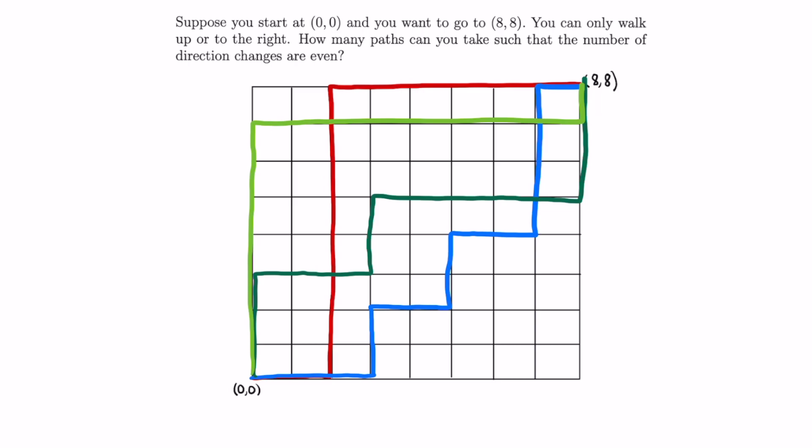But why is that? Well, we can view our path as a series of U's and R's, where U stands for up and R stands for right. As you can see, if we start with R, then changing direction will give us a U, and will stay with U until we perform another direction change,